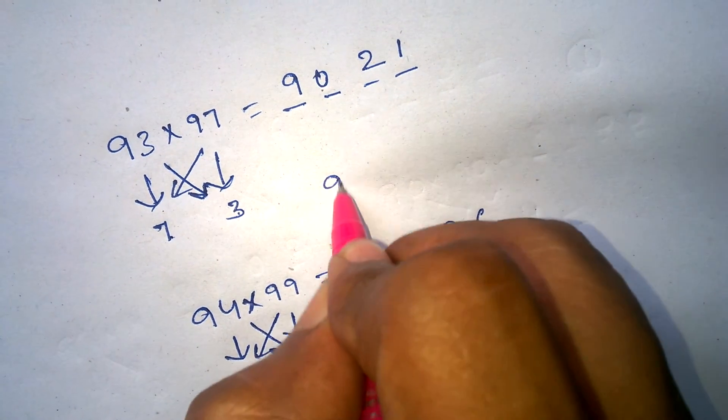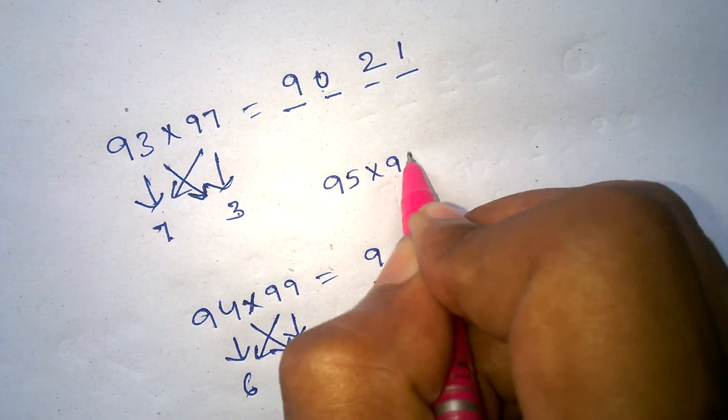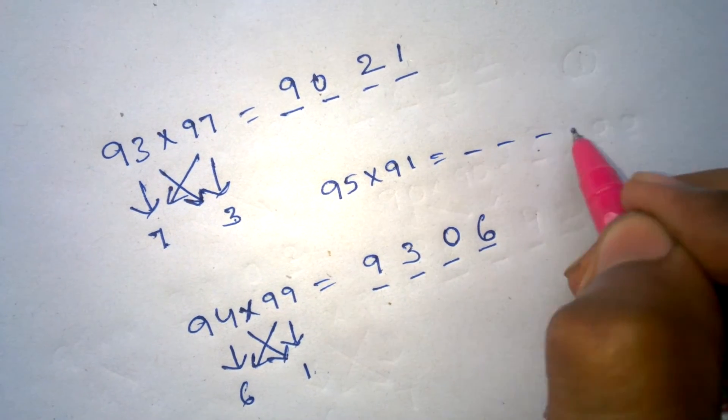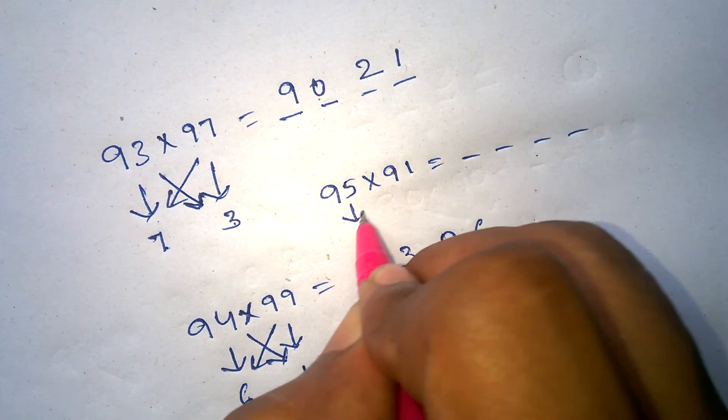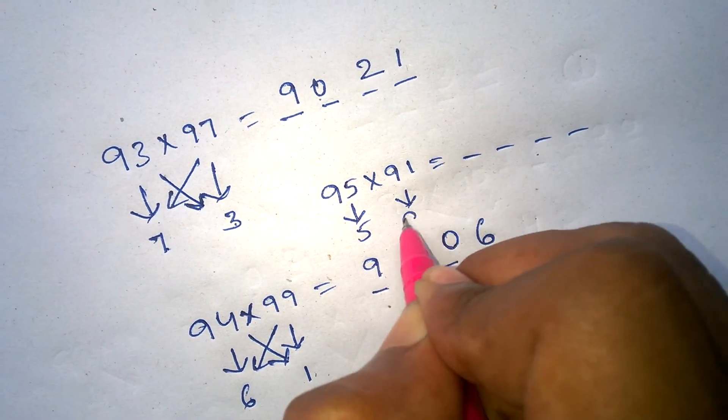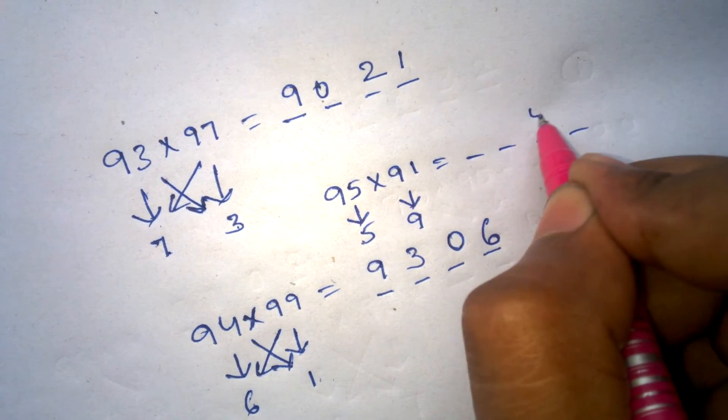Here's another example. 95 times 91. The answer has 4 digits. 100 minus 95 is 5. 100 minus 91 is 9. 9 times 5 is 45.